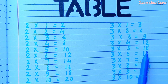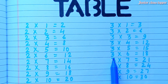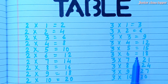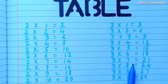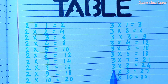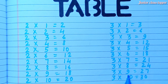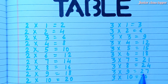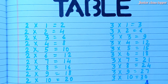Three fives are fifteen. Three sixes are eighteen. Three sevens are twenty-one. Three eights are twenty-four. Three nines are twenty-seven. Three tens are thirty.